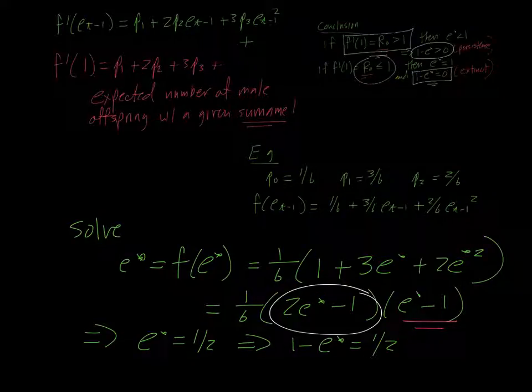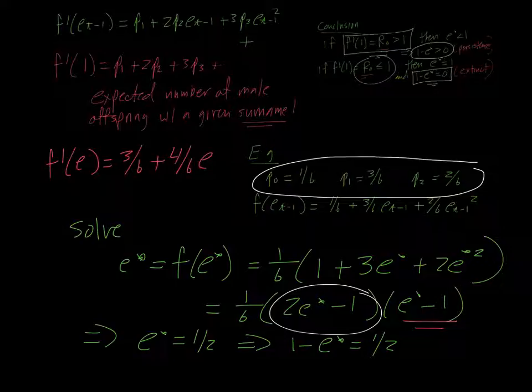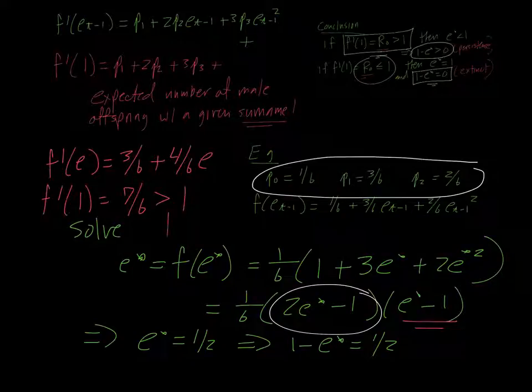So, in this particular scenario, where you have one male offspring half the time, two male offspring a third of the time, notice here, if we take the first derivative of f, we're going to have 3 over 6 plus 4 over 6 e, if we plug in 1, we're going to end up with 7 over 6, which is greater than 1, so we should expect this probability to be strictly smaller than 1, and we, of course, do.